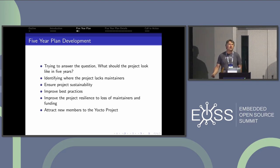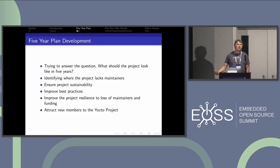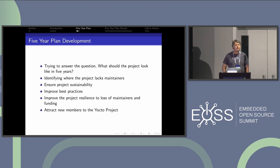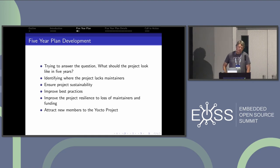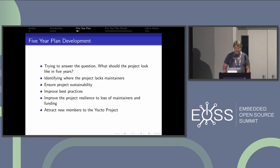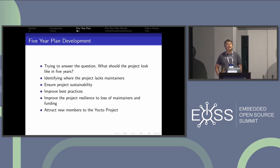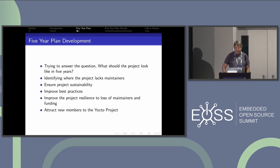Companies have been hiring anyone who has any OpenEmbedded or Yocto experience, and the problem is that's leaving very few cycles for core work and improving the overall ecosystem. We're always talking about best practices — we need to document them. We need to improve the project resilience, the bus factor, we need more people who can work in core. We're always looking for new members for the Yocto project, which gives companies a better voice into where we're going and gives us more money to help fund work.